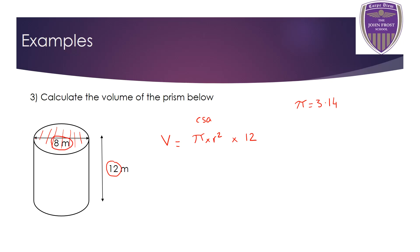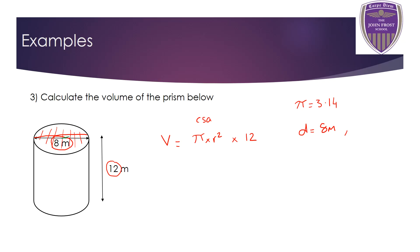The measurement of 8 goes all the way across, so that is the diameter. The radius is only halfway across — from the center to the outside — so the radius is half of 8, which is 4 meters. So the calculation is pi times 4 squared times 12.